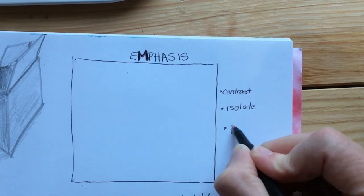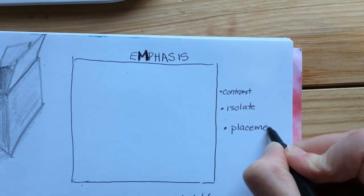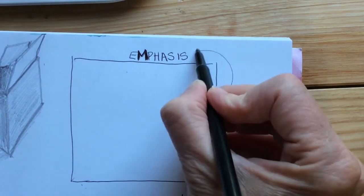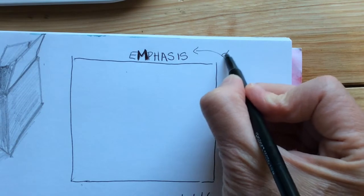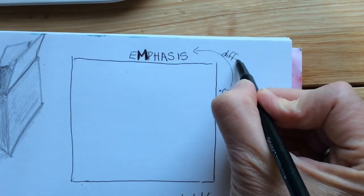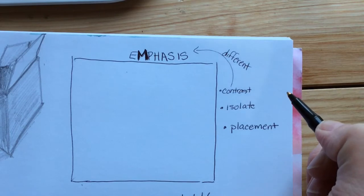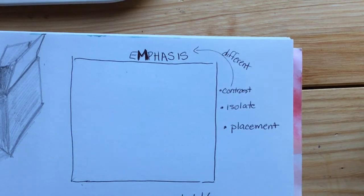You can also create emphasis by isolating something, setting it off by itself. So here you see the contrast. I made things different. Let's talk about how you set something off by itself. A lot of people do this in their artwork.